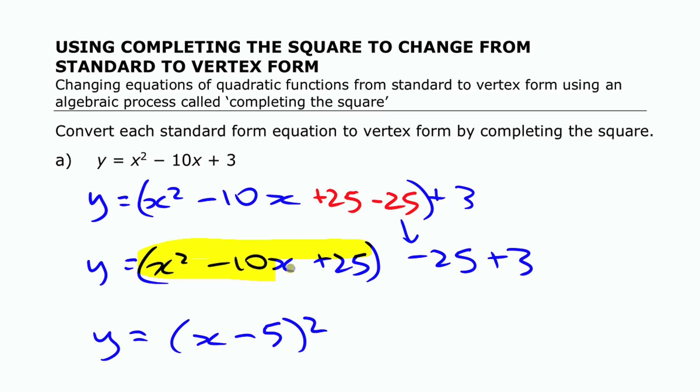So once I've put my plus 25 minus 25, I can just group those three terms and then leave this minus 25 out that I can combine together with that 3. Now this perfect square trinomial I can write as this binomial square, and then my leftover values out here I can combine those together and make this minus 22.